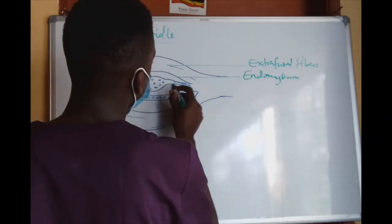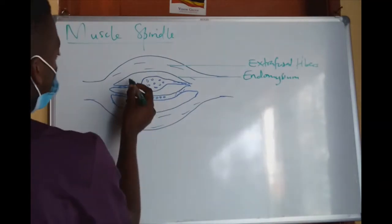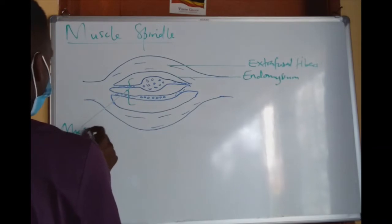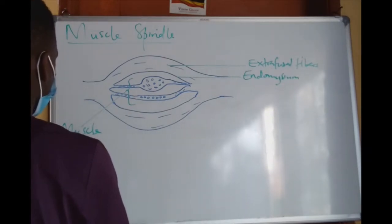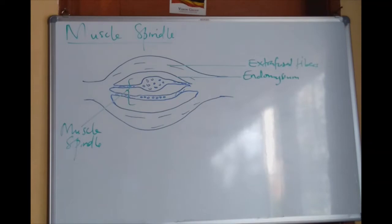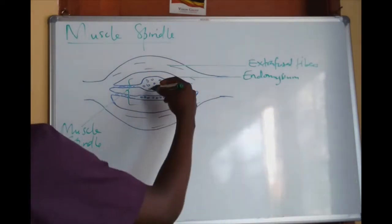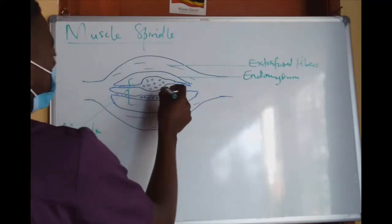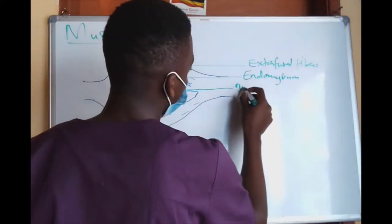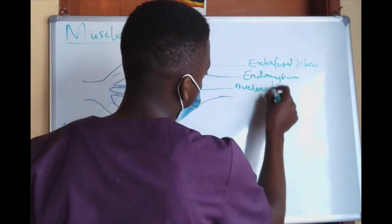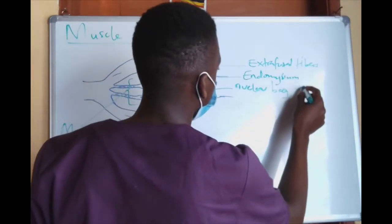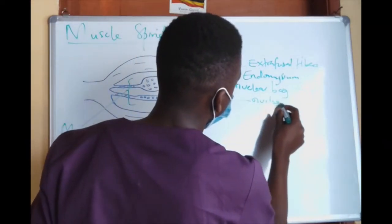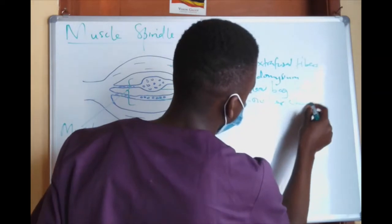This here is the nuclear bag — it has several nuclei at the expanded portion forming the nuclear bag fibres. And these ones are the nuclear chain fibres. Both are intrafusal fibres forming what we call the muscle spindle.